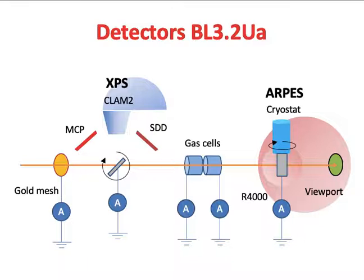Behind the XPS station, we have an Angle-Resolved Photo Emission Electron Energy Analyzer — we call this the ARPES station. The sample is mounted on a cryostat manipulator to cool the sample down to 5 Kelvin from room temperature. We have the R4000 Electron Energy Analyzer with high electron energy and momentum resolution.